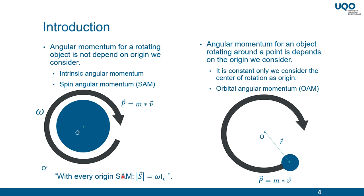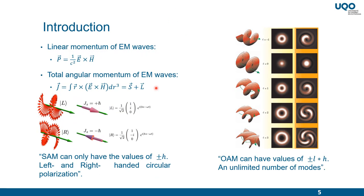The spin angular momentum is an intrinsic property, but for the angular momentum of a rotating object around a point, it depends on the origin we consider. We name this property orbital angular momentum, and it is not an intrinsic property. For electromagnetic waves, we can also define linear momentum and angular momentum values.